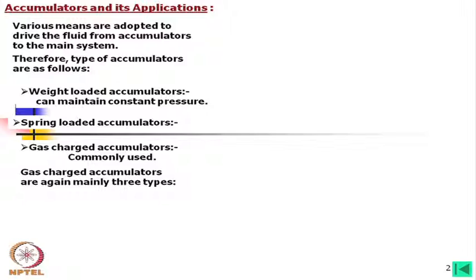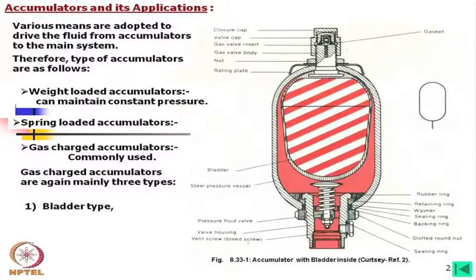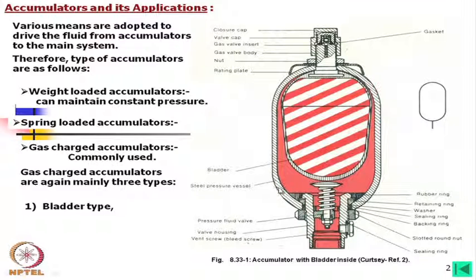Gas-charged accumulators are mainly of three types. The most common is the bladder type. If we study the figure, we find that the outside is the main casing — a steel pressure vessel — and inside there is a bladder which is usually charged with gas. Nitrogen is very common, however one can use ordinary air also.